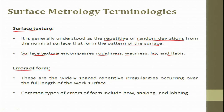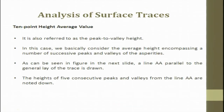Errors of form are widely spaced repetitive irregularities occurring over the full length of the workpiece. Common types include snaking, lobbying, and bow — bow meaning deflection of the surface. Analysis of surface traces involves measuring and analyzing surface irregularity data. In roughness measurement, you scribe a stylus over the surface to detect all irregularities.